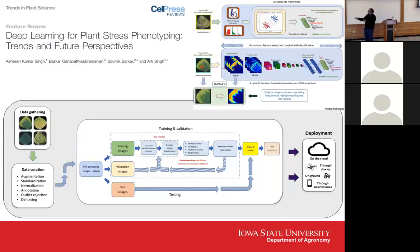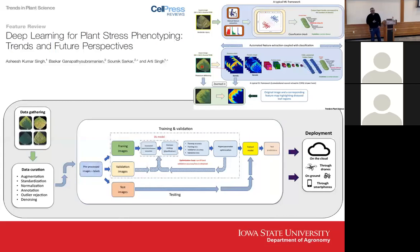The pipeline for this is: you have your data that you're gathering, then data curation — which is very, very important — then training and validation. You have to be very careful that you're not overfitting the model, so you may use k-fold cross-validation with plenty of data, tuning your hyperparameters to continuously improve your model. Once you think you have a good model, you test it with unseen data, and if it's good, you're ready to deploy. This is the hard part: you have to collect good data. Sometimes bad data is worse than no data. That's where those of us in plant sciences come into the picture — we provide good data to our computational scientists.